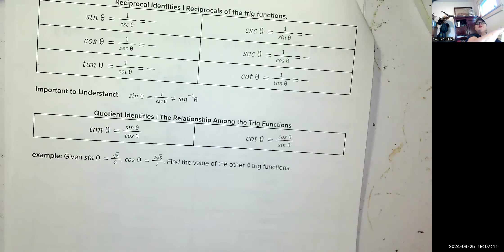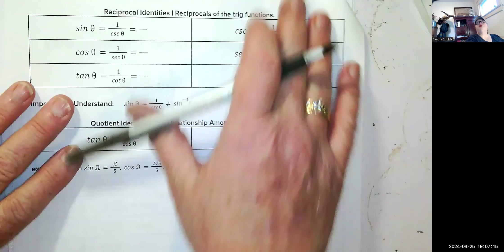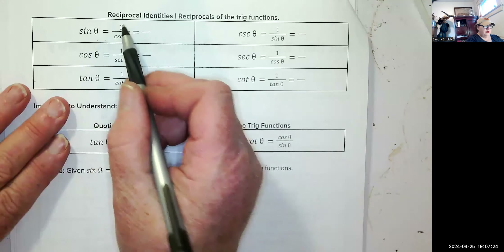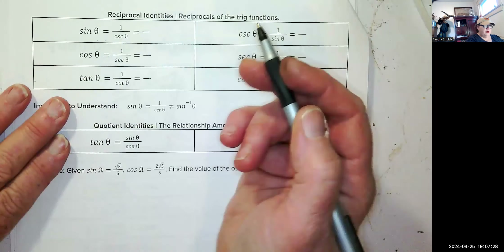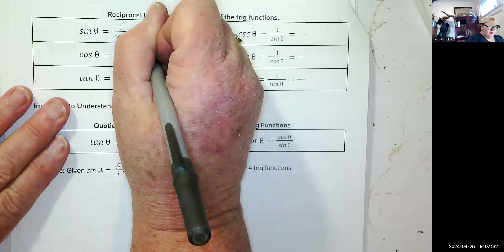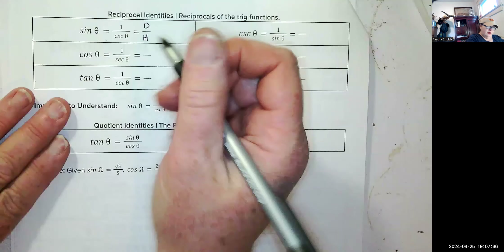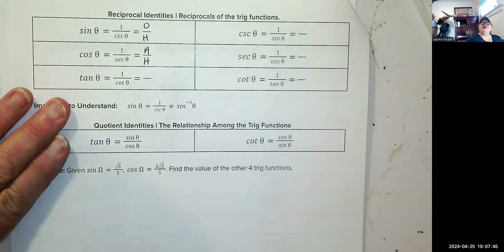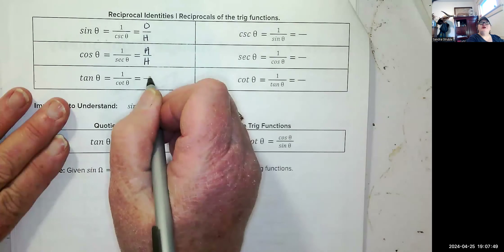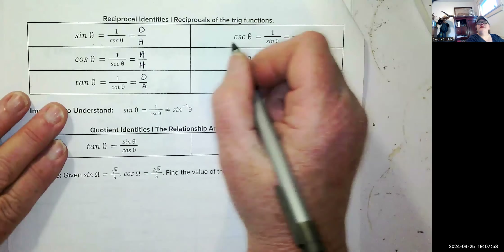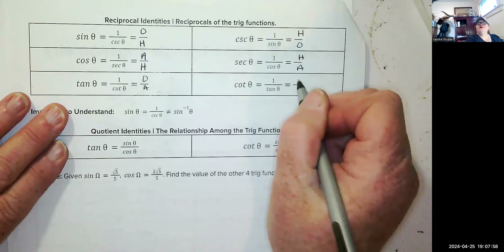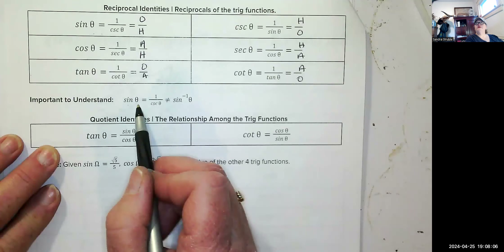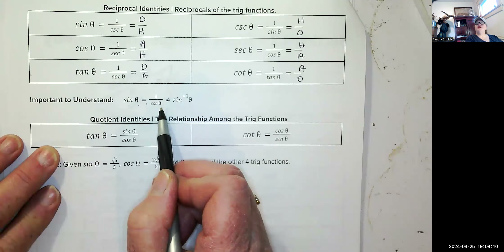Let's talk about some identities — reciprocal identities. Sine of theta equals one divided by cosecant of theta; it's also opposite over hypotenuse. Cosine of theta equals one over secant of theta; it's also adjacent over hypotenuse. Tangent of theta equals one over cotangent of theta; it's opposite over adjacent. Cosecant of theta equals one over sine of theta — that's what you use with these identities.